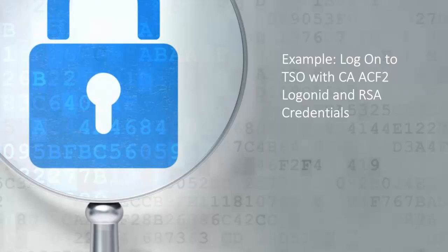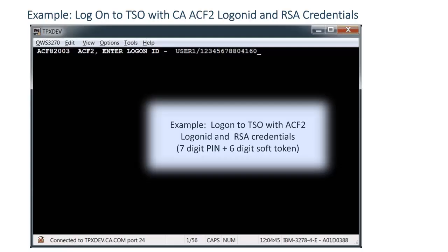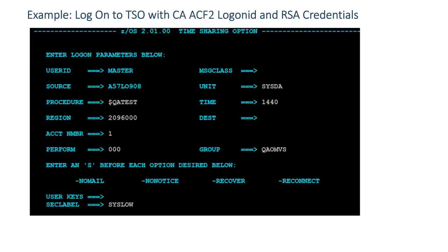This example shows how to logon to TSO with an ACF2 login ID and RSA credentials — a 7-digit PIN plus a 6-digit soft token. Note that we allow two-factor authentication for all users or a subset of users. If factor service disruptions occur, CA ACF2 falls back to regular password or password phrase authentication.